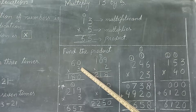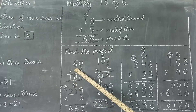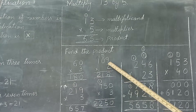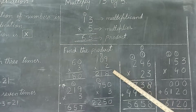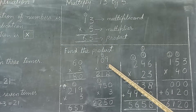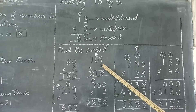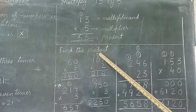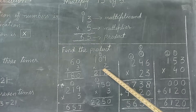Uske baad aapne 3 ko 10th digit se multiply karna hai — iska table parhna hai: 3 sixes are 18. Maine pehle bhi kaha hai ki agar aap 6 ka table 3 tak bhi parhenge to bhi 18 hi aayega. Go to next question: 109 multiplied by 2. 2 nines are 18 — 8 place kiya, 1 carry liya. Ab multiplier ko 10th digit se multiply karein: 2 zeros are 0.